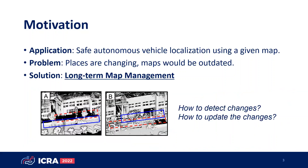However, as far as we know, there is not yet a strictly agreed rule or pipeline to update a point cloud map. I would like to show you two snapshots of the same place from different time instances. As you can see, we need to detect some disappearing things and newly appeared things, while trying not to forcefully remove or add some occluded structures. This paper is about these questions: how to detect changes, and how to update the changes.